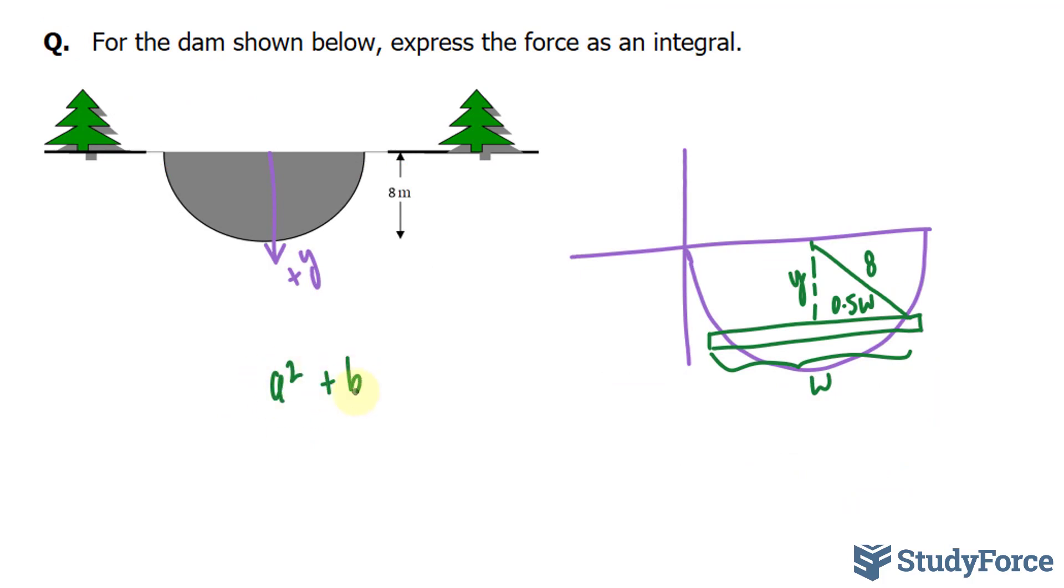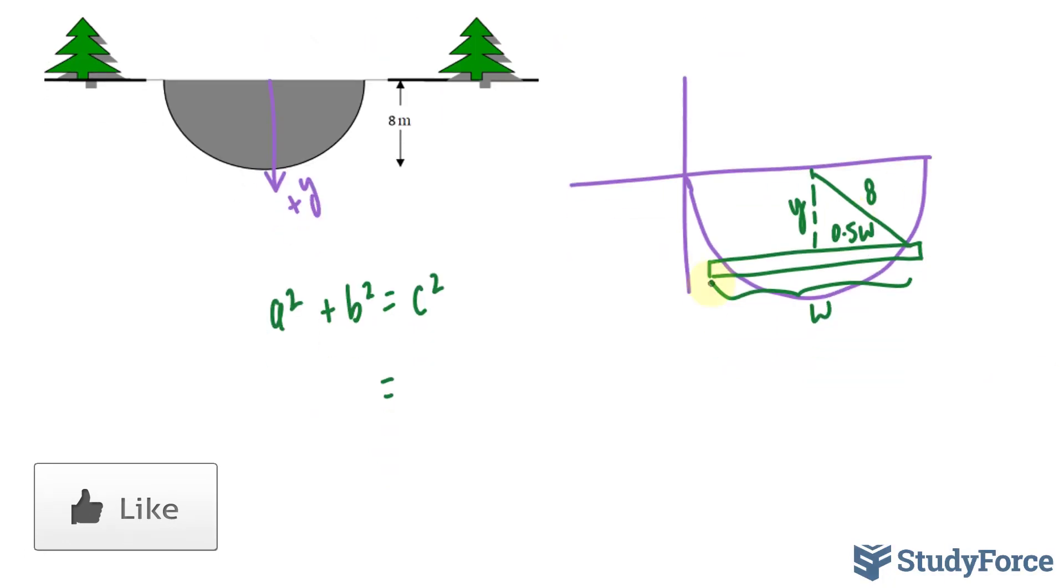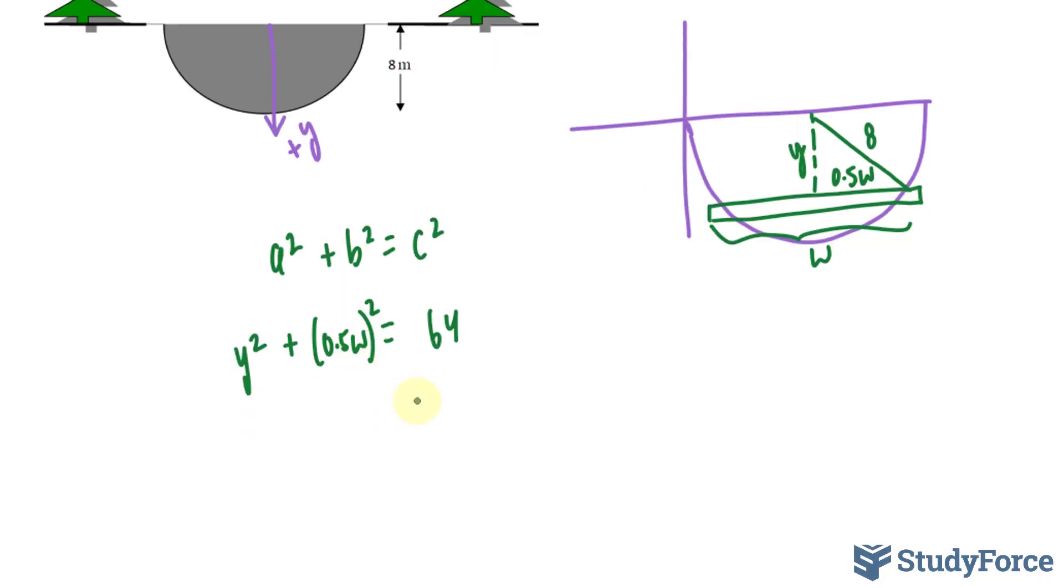We have a squared plus b squared is equal to c squared. c squared is 64. This is a, we'll call it y squared, and this is b, 0.5w to the power of 2. I'm going to solve for w, we have 64 minus y squared equals 0.5w to the power of 2.